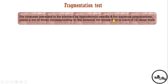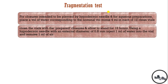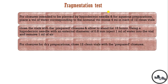We close the vial with the closure and allow it to stand for 16 hours. Using a hypodermic needle with an external diameter of 0.8 mm, we inject 1 ml of water into the vial and remove 1 ml of air. For closures for dry preparations, we close empty vials with the prepared closure without filling any water.